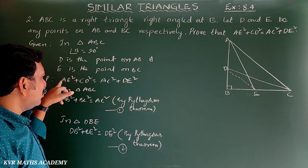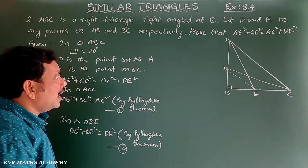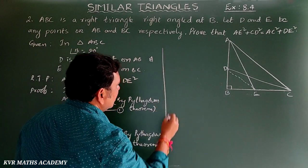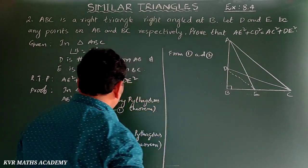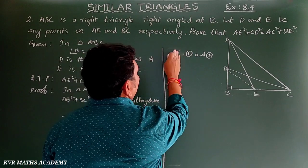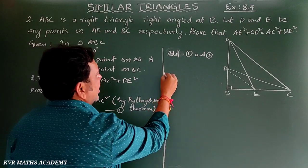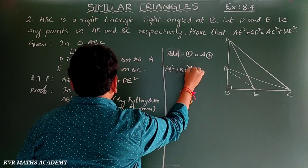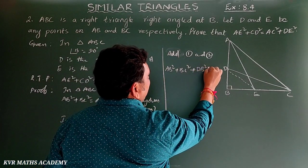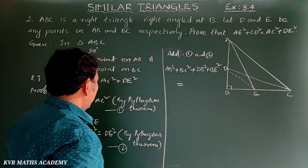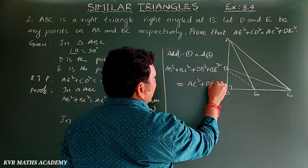We have to prove AE² + CD² = AC² + DE². So, add equations 1 and 2: AB² + BC² + DB² + BE² = AC² + DE².